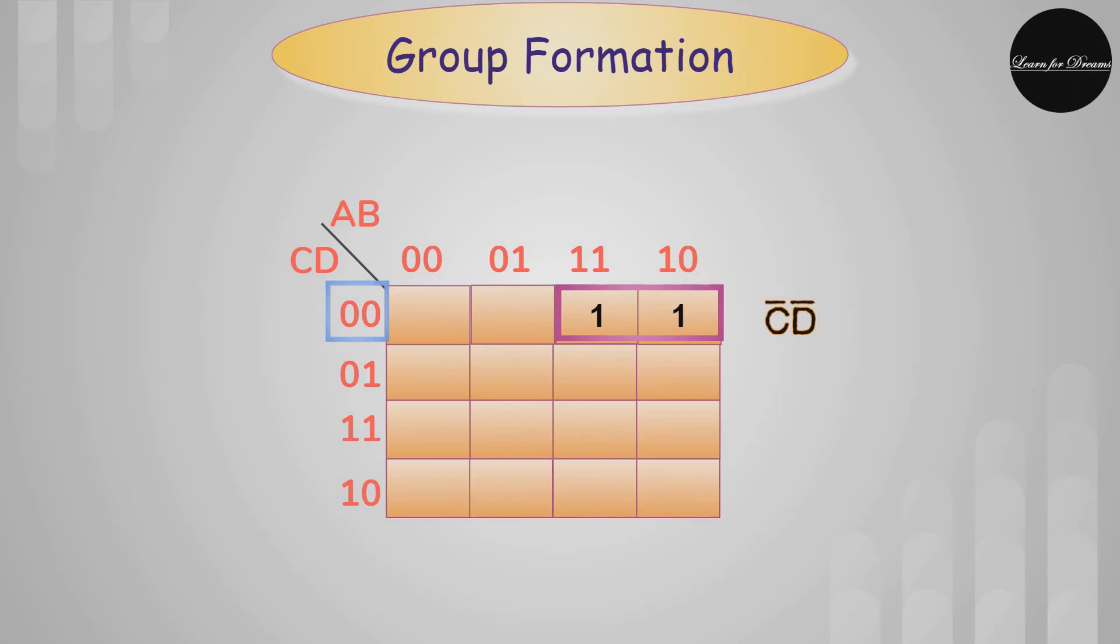So directly write it as it is. 11, one is same and 10 is different. So see here the value of A that is 11 is same and the value of B 10 that is different. So we will neglect B and write only A. Here you get the equation for the grouping of two ones.